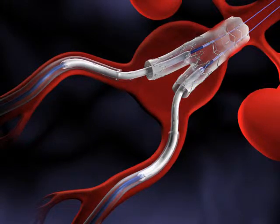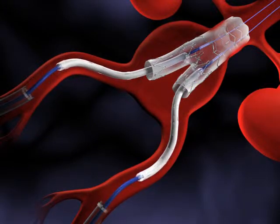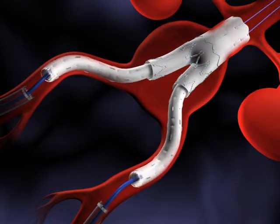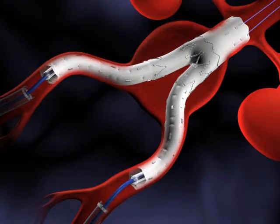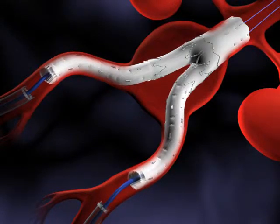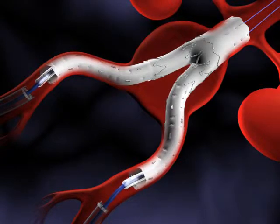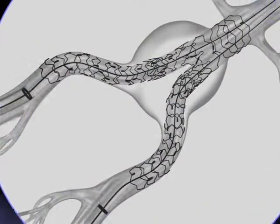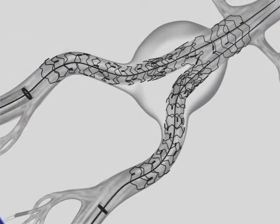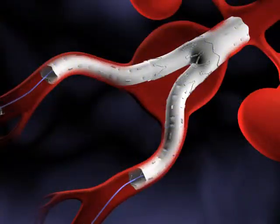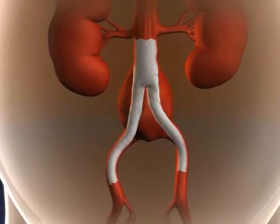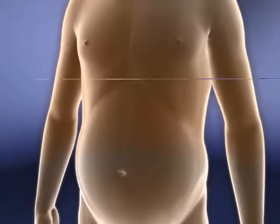The iliac grafts are advanced simultaneously until the radiopaque markers of the catheters align with the radiopaque markers of the sheaths. Pulling the sheaths back exposes the iliac grafts. The balloon catheters are inflated twice to five atmospheres for 30 seconds. After final deflation, the balloons are stretched to reduce their profiles and removed. A completion angiogram follows, then removal of the guide wires and introducer sheaths, and closing of the access sites completes the procedure.